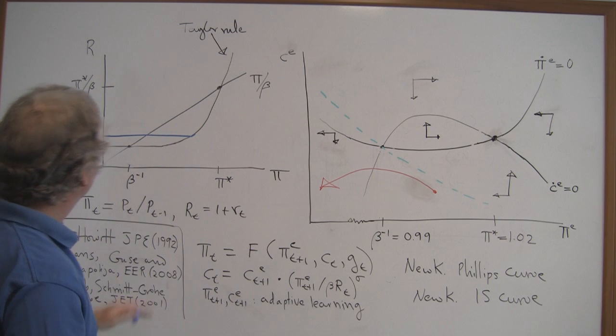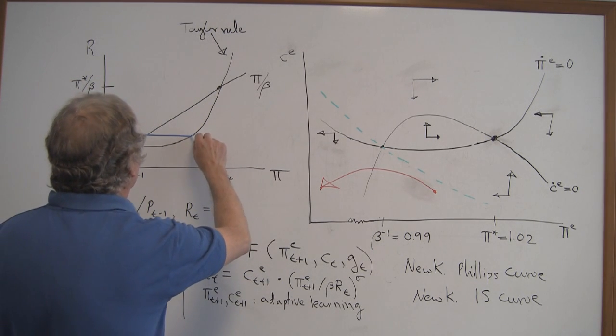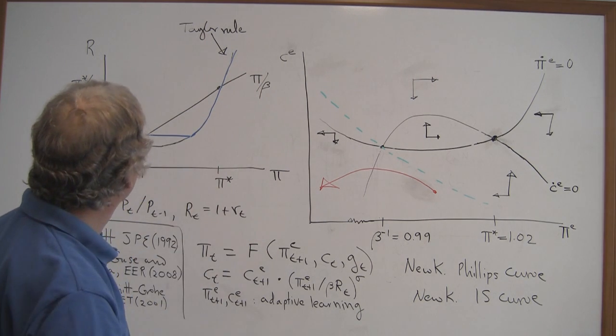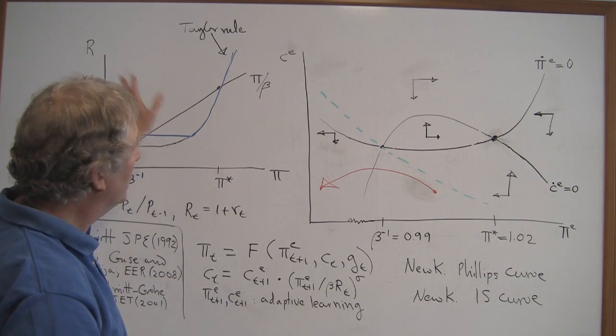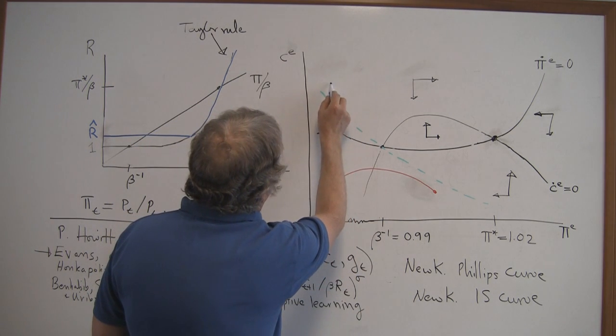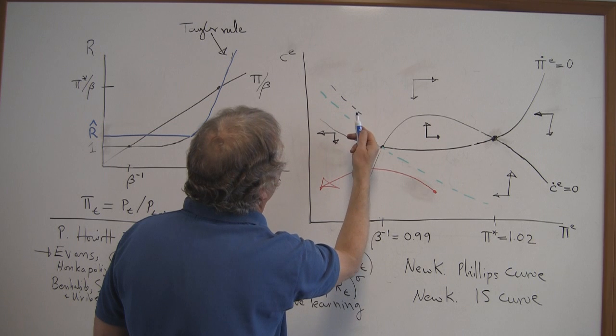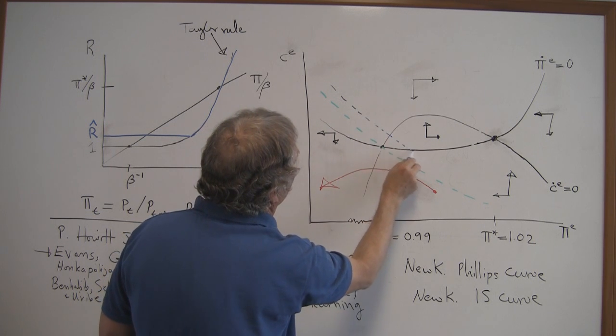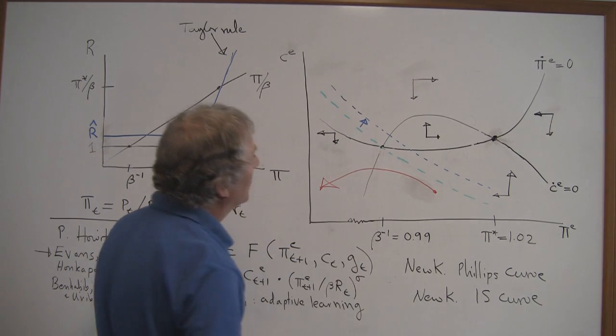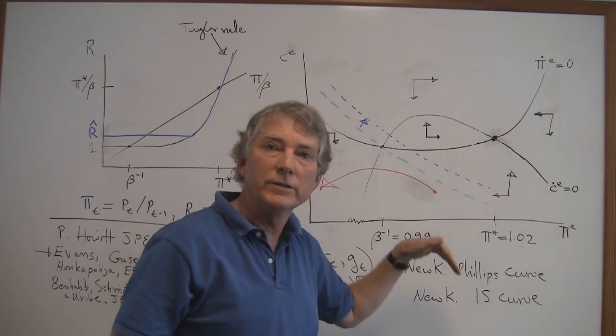Well, if we increase interest rates, then effectively, I'm assuming that we will go back to the Taylor rule if inflation is high enough. So if we increase interest rates, what's that going to do? Well, if you work out the details under the expectational dynamics, it turns out that you just push this curve up.